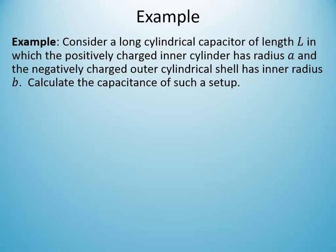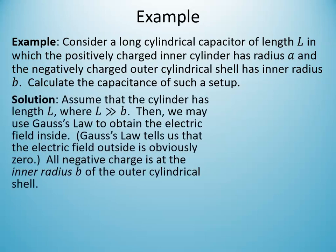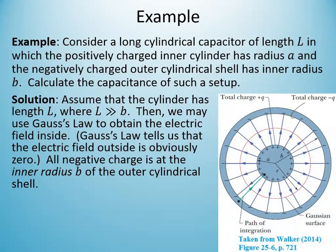Let's consider a long cylindrical capacitor of length L, where the positively charged inner cylinder has radius A and the negatively charged outer cylindrical shell has inner radius B. We assume the setup is effectively infinitely long, and there's vacuum between the two conducting surfaces. The general approach to calculating capacitance for any shape — cylinder, sphere, or parallel plate — uses the definition of capacitance, Gauss's law, and integration.